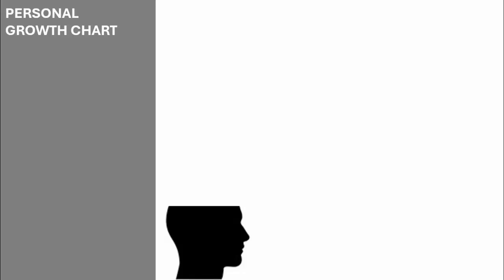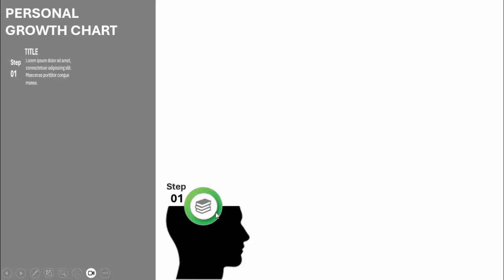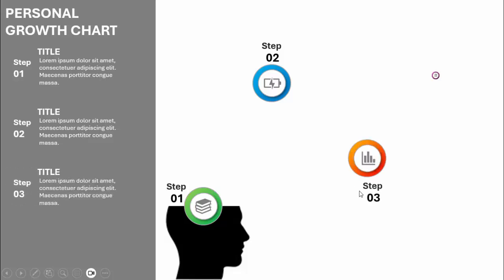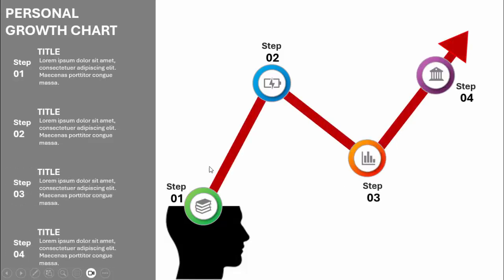In today's tutorial I'm going to show you how to create a personal growth chart in PowerPoint. This is how the slide looks — I have downloaded a head silhouette image from the internet. When I click it will show me the first step, and at the extreme left I will get the title and detailed text. When I click again it will show step 2, step 3, and step 4 with different color combinations.